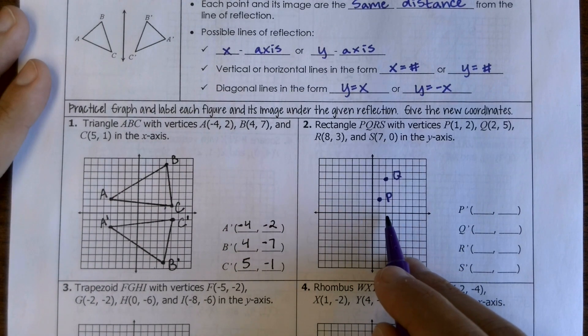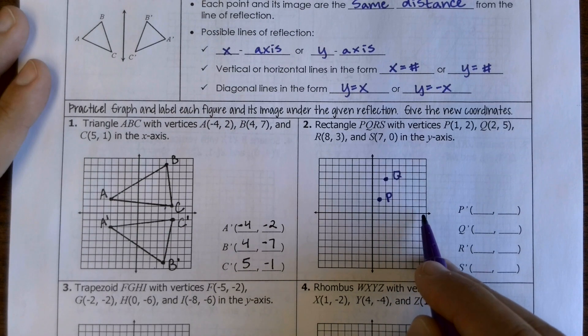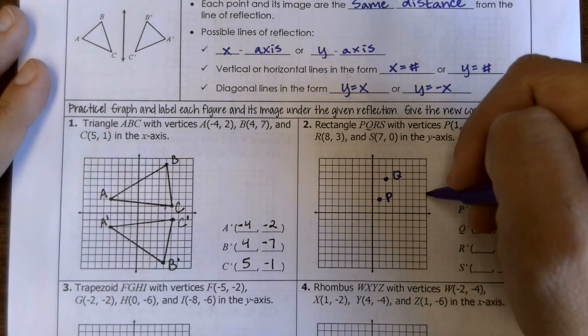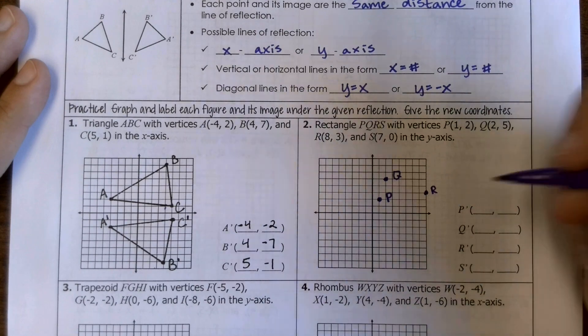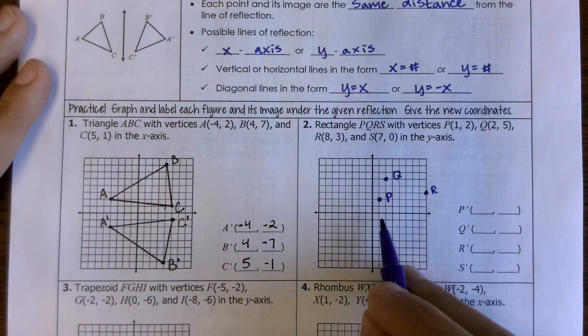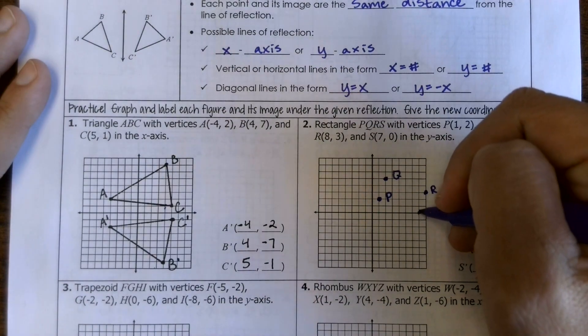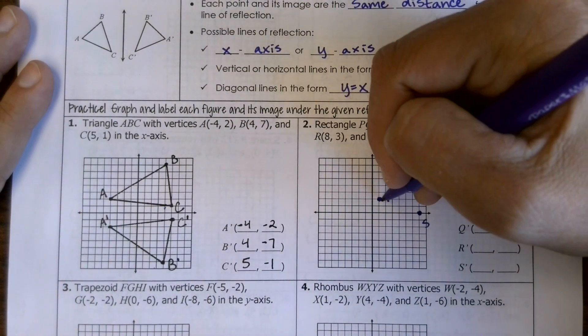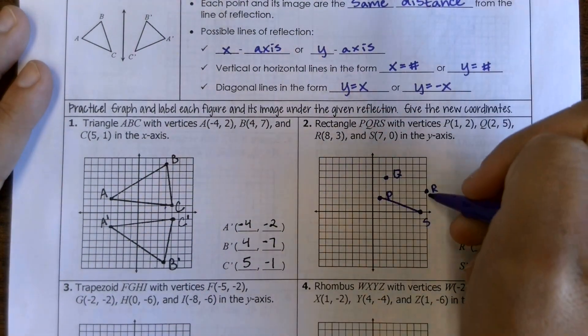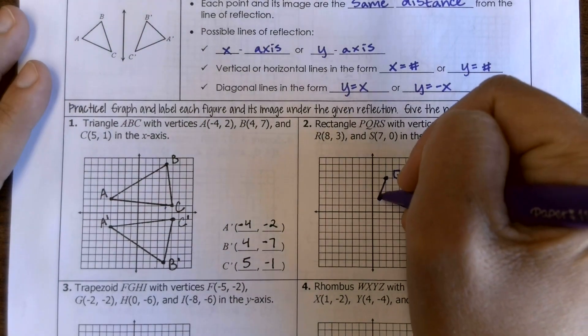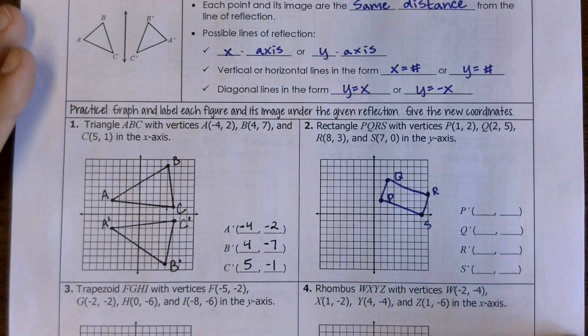We've got R at (8, 3). And then S at (7, 0). And it looks pretty well like a rectangle. Okay.